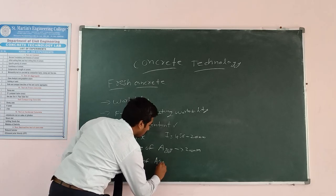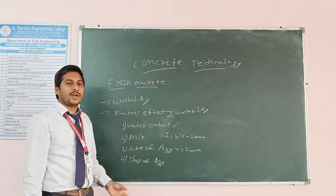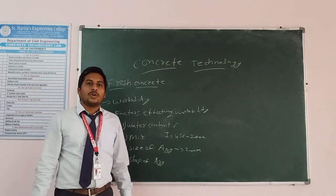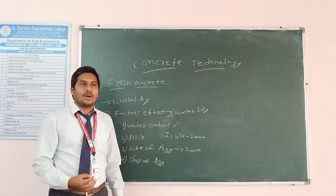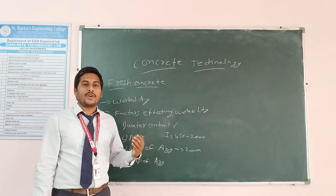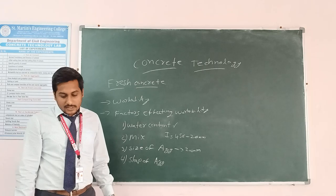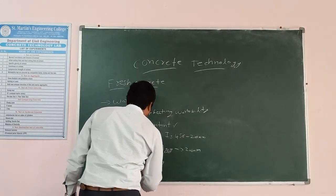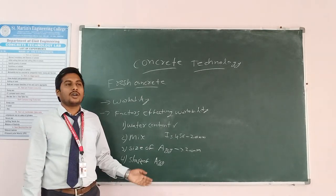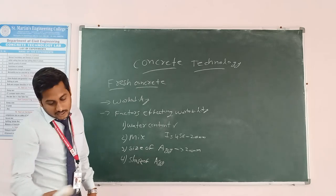The fourth factor is shape of aggregates. We use different types of aggregate shapes. If the aggregate is not in irregular shape, the concrete will have more strength. If it is smooth, the strength of the concrete will be very less.